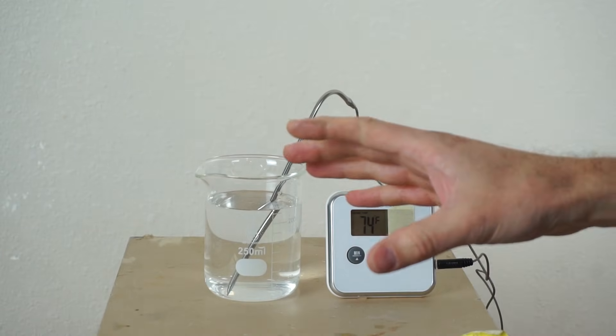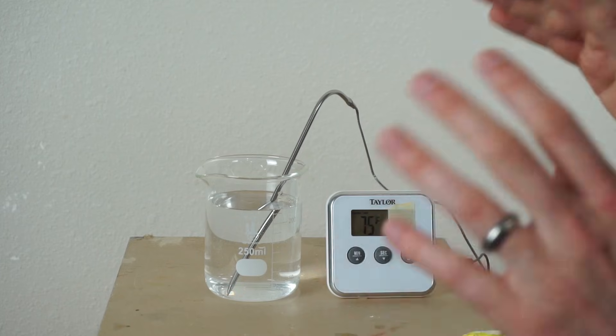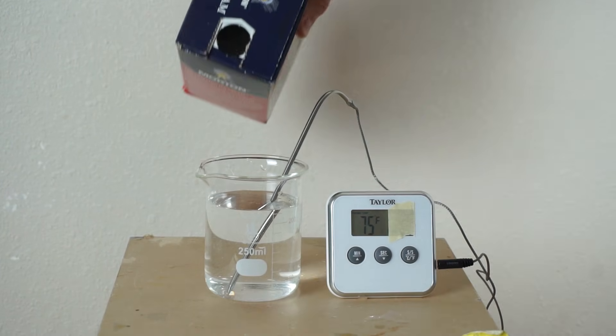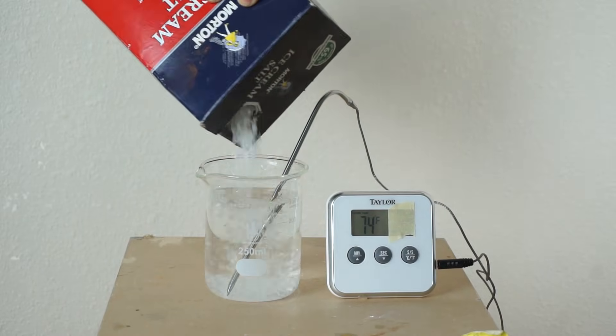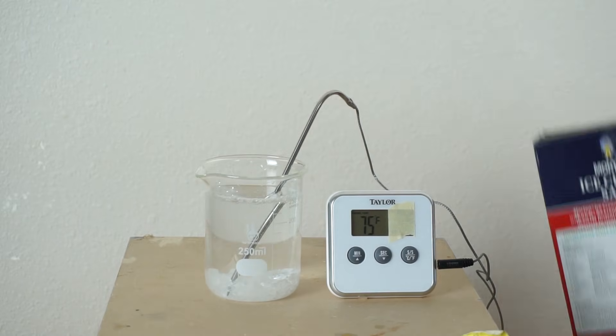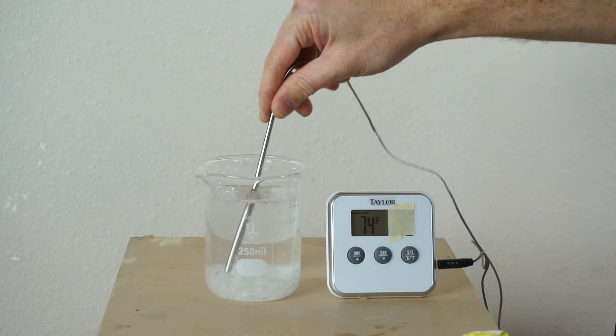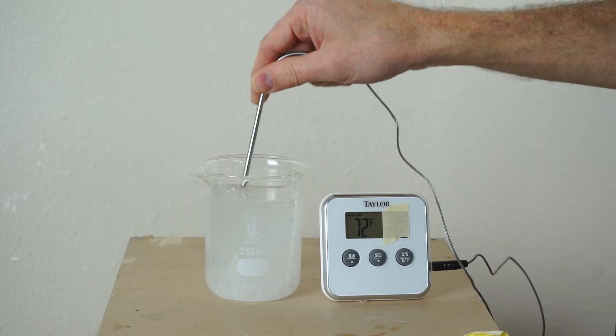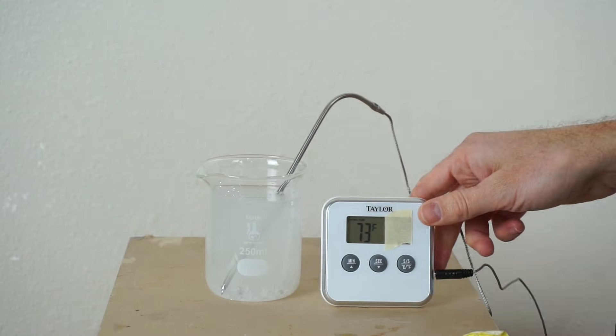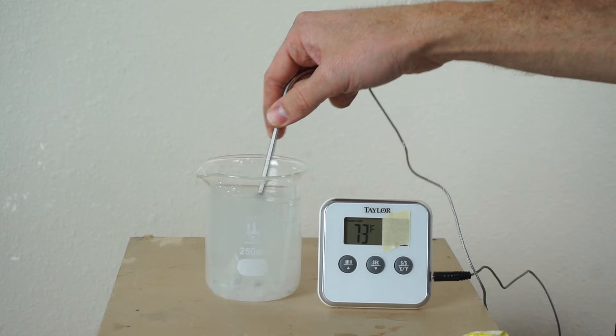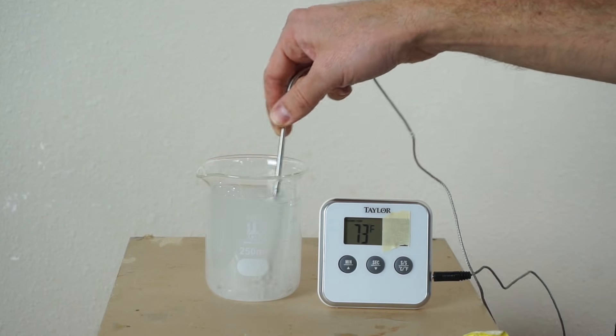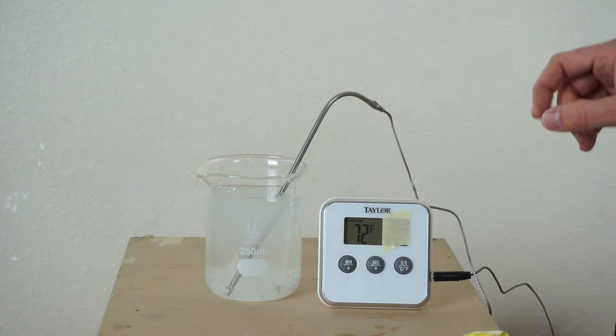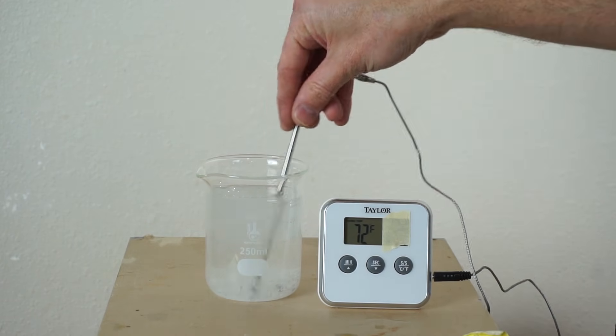Here's proof number one that salt does not melt ice. In order to melt ice you need to add heat to it. But let's see what happens when we add salt to water. So the water just got colder.